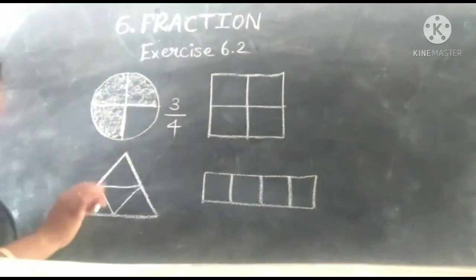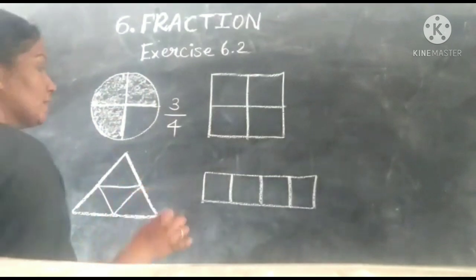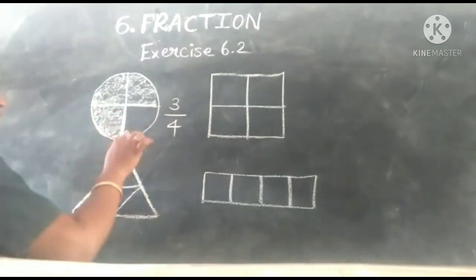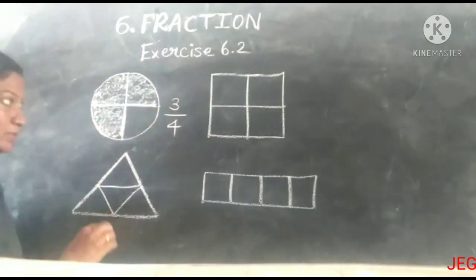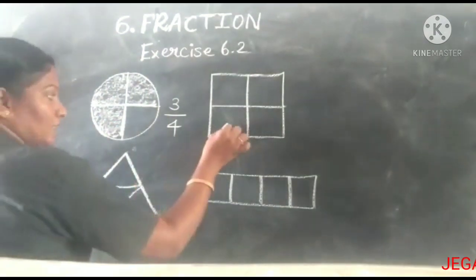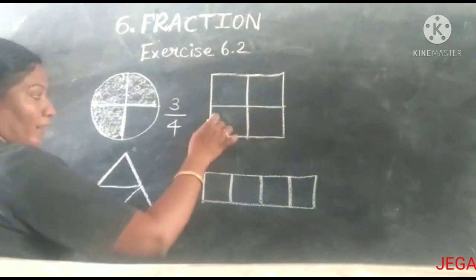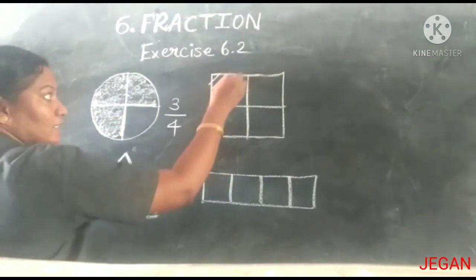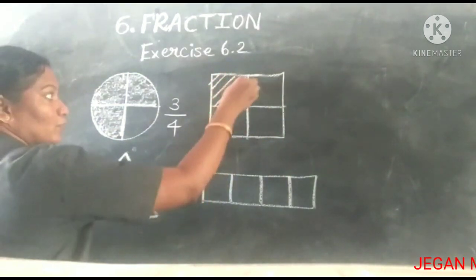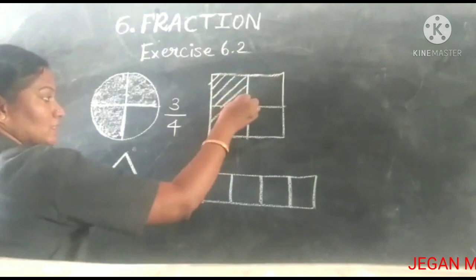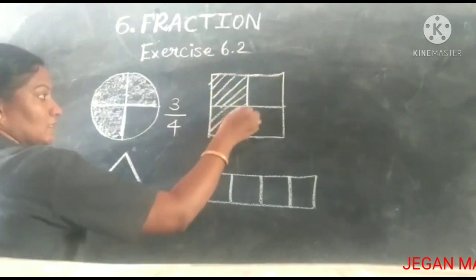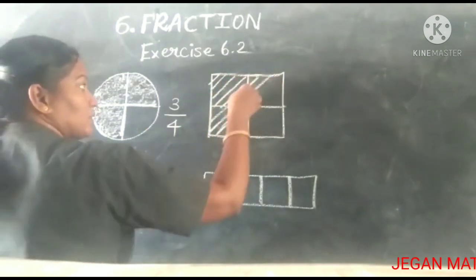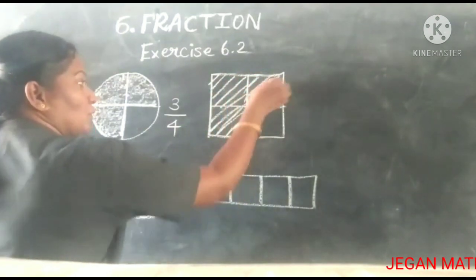So last one — square. That is one-fourth and this is three-fourths. So here — square, same thing. Here also you shade the three-fourths part. So that is like this — three-fourths.